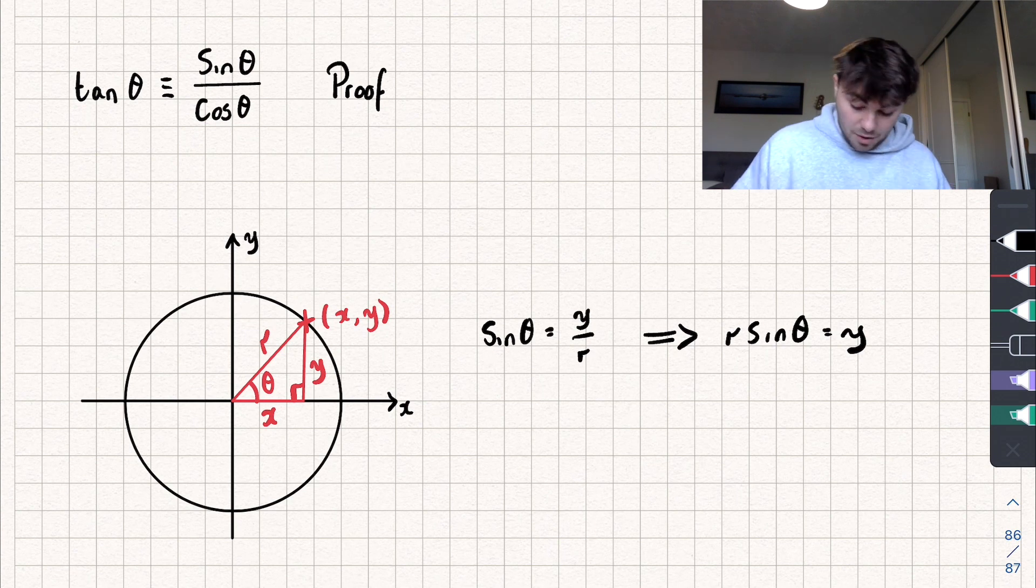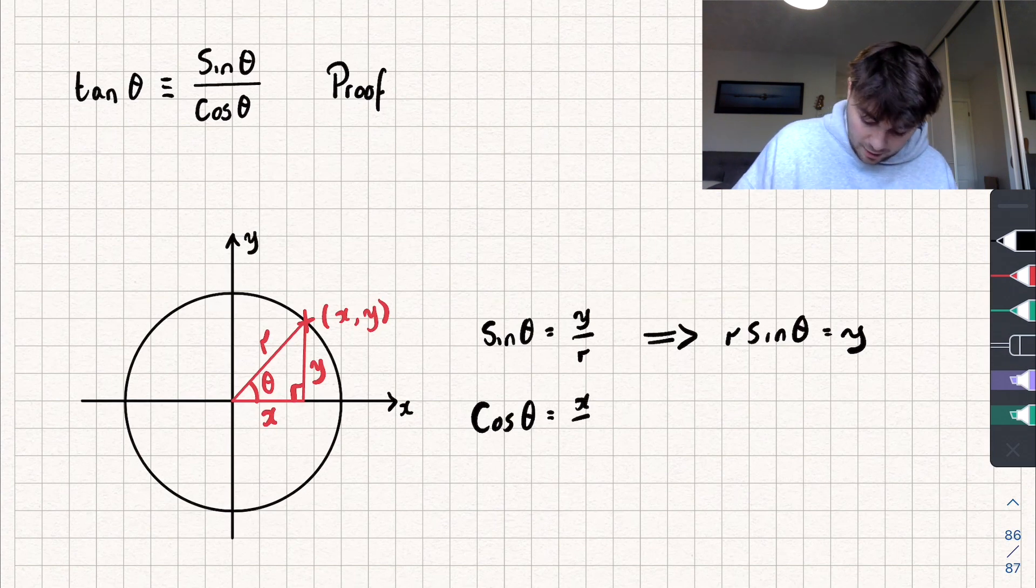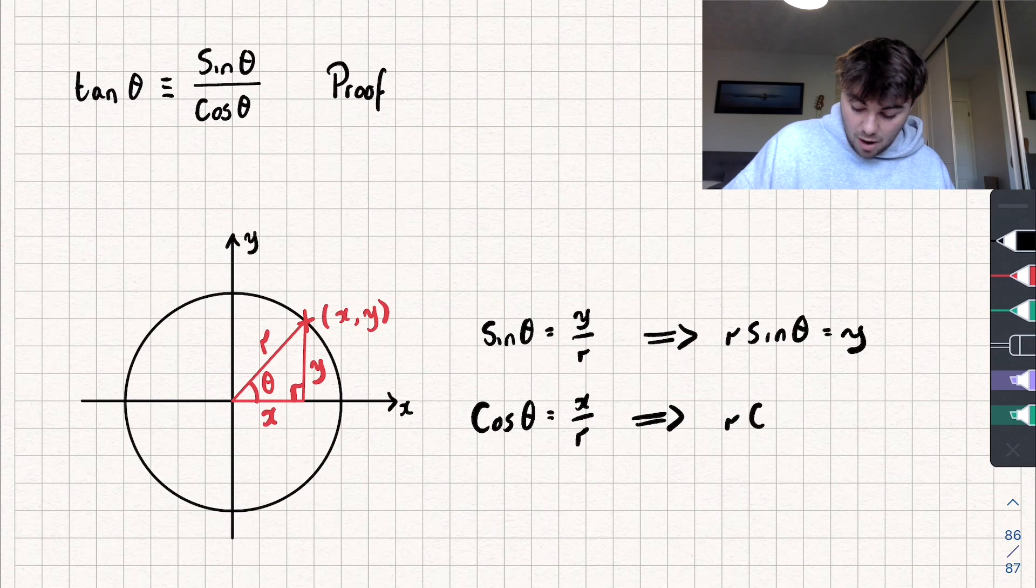Let's do a similar thing but with cosine of theta. So cos of theta, well that's equal to the adjacent side divided by the hypotenuse. So we get that that's equal to x divided by r. Multiplying both sides by r, we get that r cosine of theta is equal to x.